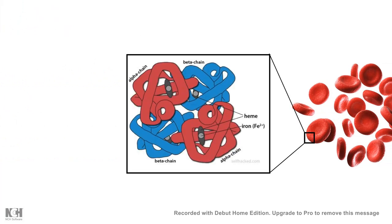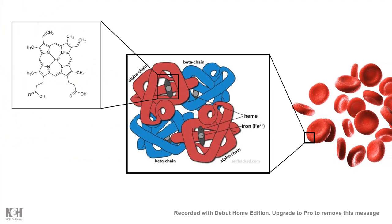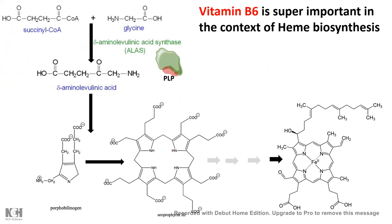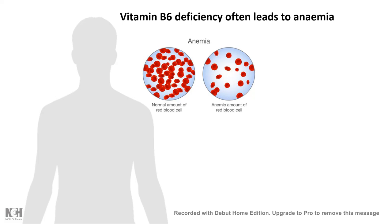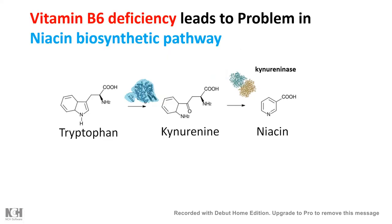Hemoglobin, the active molecule in blood, contains heme moieties which carry oxygen. The key enzyme for heme synthesis is delta-aminolevulinic acid (ALA) synthase, which converts succinyl-CoA and glycine into delta-aminolevulinic acid — the first step of heme synthesis — and this enzyme requires PLP as its coenzyme. Without vitamin B6, ALA synthesis is non-functional, heme is not produced, and the result can be an anemic state.